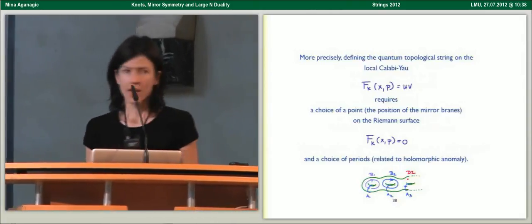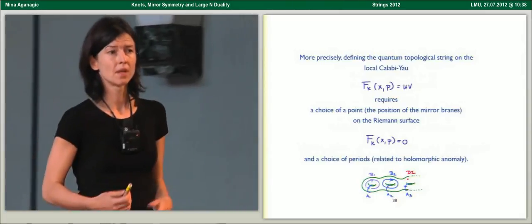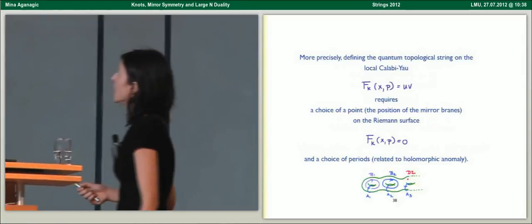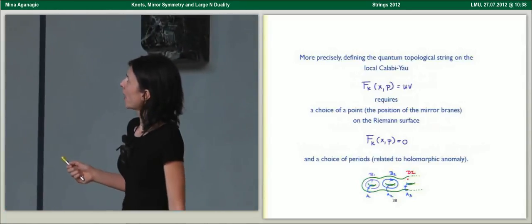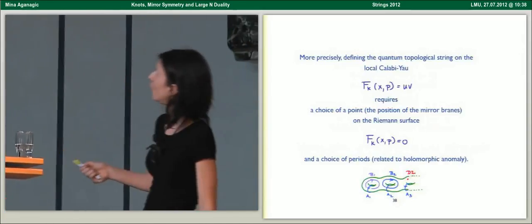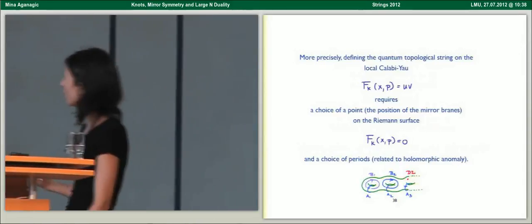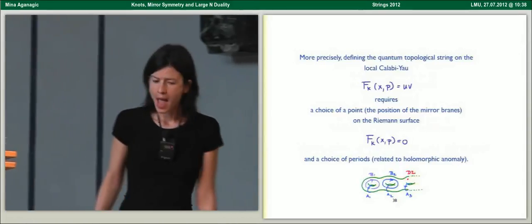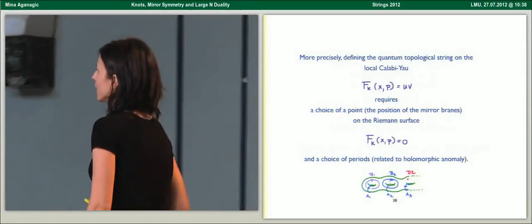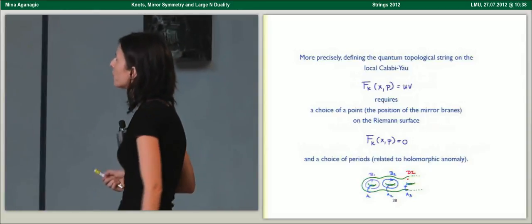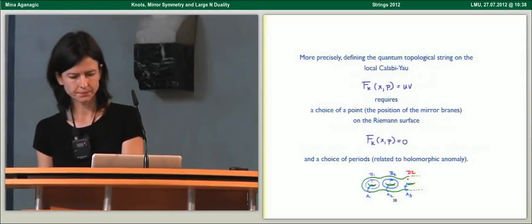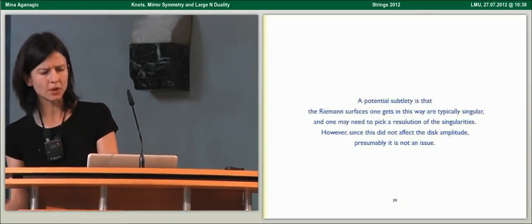This is simply because quantization of topological string adds no new data to this problem. More precisely, you have to have a well-defined quantum theory to begin with. To do that, you need a Calabi-Yau, specify the position of the mirror brane - you have lots of choices of the point on the Riemann surface where the mirror brane is, and you have to choose the right one. Moreover, you need to make a choice of periods on the Riemann surface, related to the holomorphic anomaly of topological string.